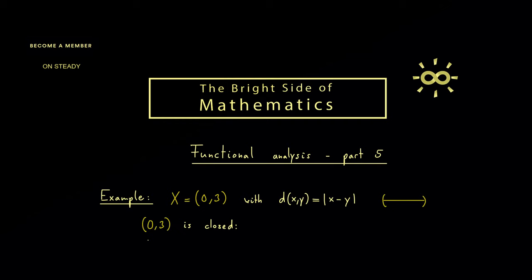What you also know is that the subset 0 to 3, which is the whole space, is a closed set inside this metric space. For example, you could argue that the complement, which is the empty set, is clearly open.